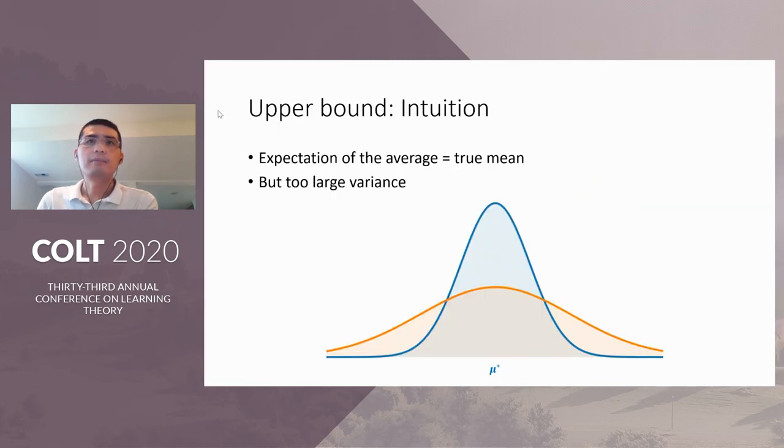Now let's talk a bit about the high level idea behind the analysis. For the upper bound, let's first consider the simple estimator by just averaging all the samples. Then the expectation of this average equals to the true mean. However, it has too large variance, just because we don't have control over the variances of the Gaussians outside the good subset.